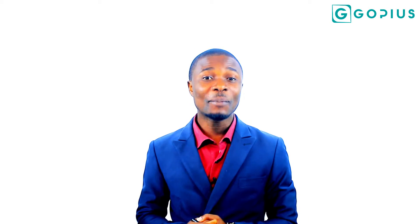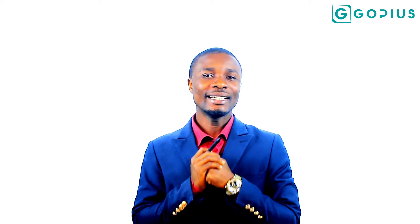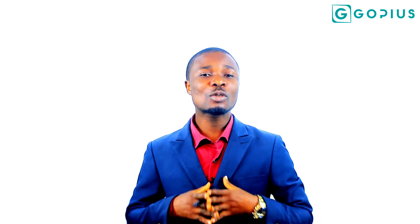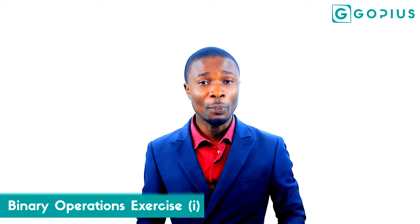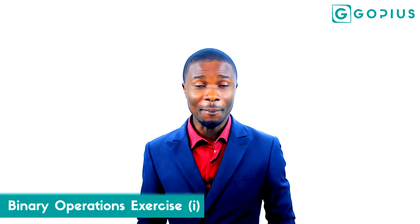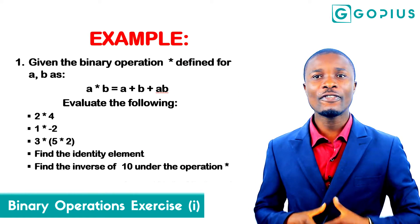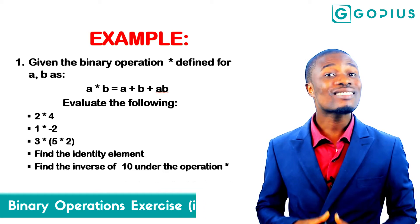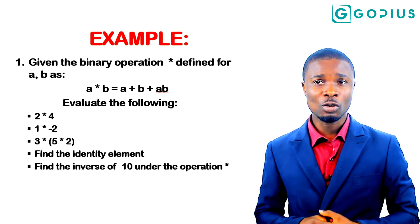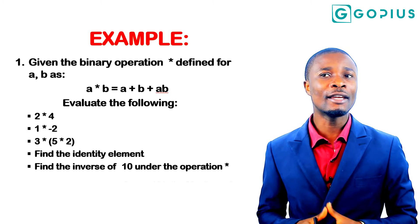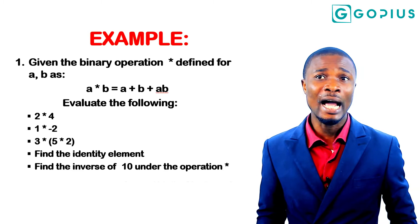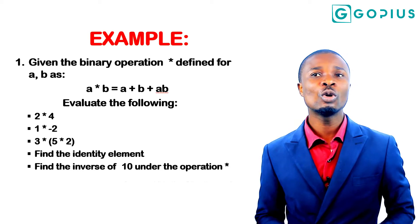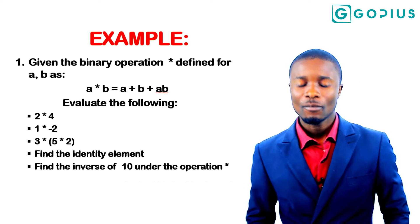Alright ladies and gentlemen, welcome back. In this session we are going to see how all the stories from the previous session will play a part in solving mathematical problems involving binary operations. On the screen we have the first example where we are asked to find 2★4, 1★(-2), 3★(5★2), also the identity element and the inverse of 10, under the operation star defined as a★b = a+b+ab.